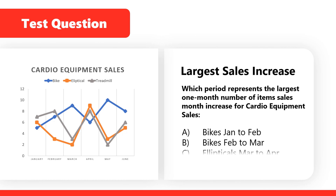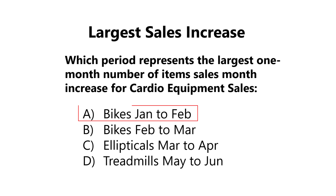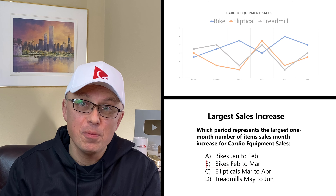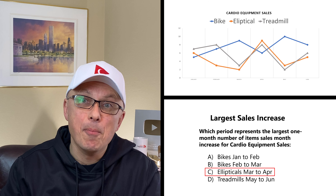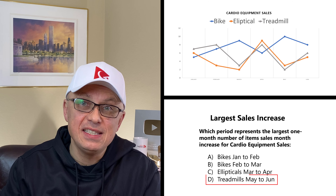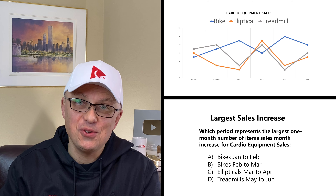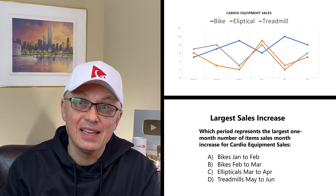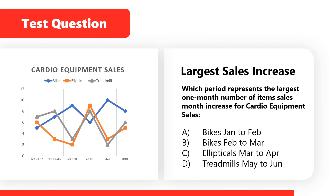Specifically, you need to determine which period represents the largest one-month number-of-items sales increase for cardio equipment. The four choices are: A — bikes from January to February, B — bikes from February to March, C — ellipticals from March to April, and D — treadmills from May to June. Give yourself five to ten seconds to see if you can come up with the right solution.